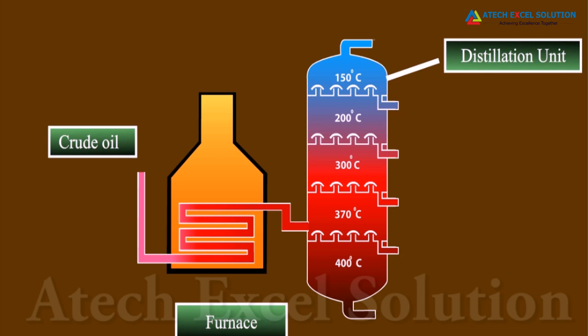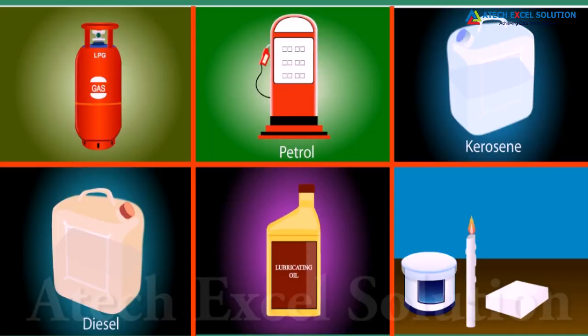The process of separating the various constituents of petroleum is known as refining. It is carried out in a petroleum refinery. Petroleum is a mixture of various constituents such as petroleum gas, petrol, diesel, lubricating oil, paraffin wax, etc.